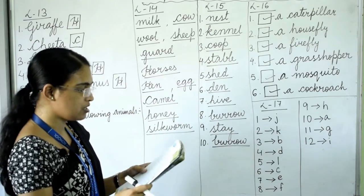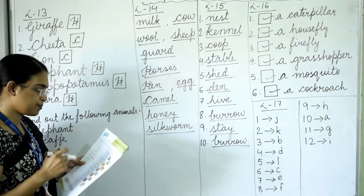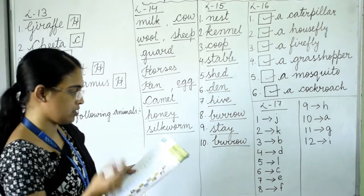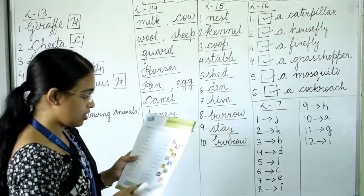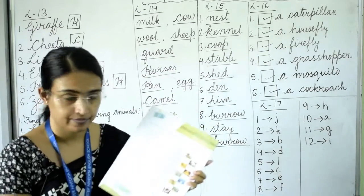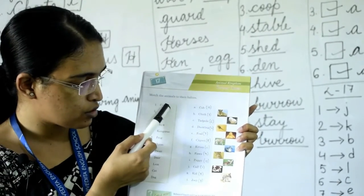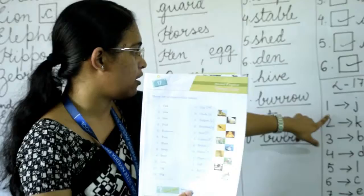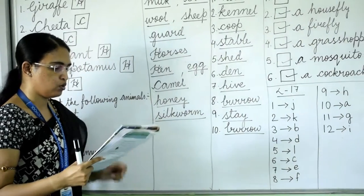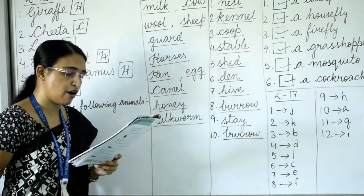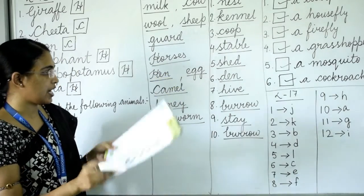Turn the page to lesson 17 — animals and their young ones. We have to match animals to their babies. Number one: cow — the baby is called a calf, answer is J. Number two: goat — the baby is called a kid, answer is K.